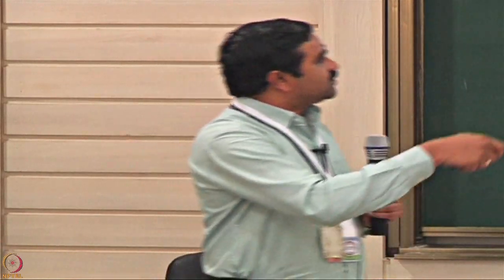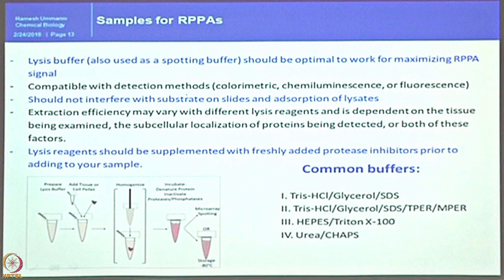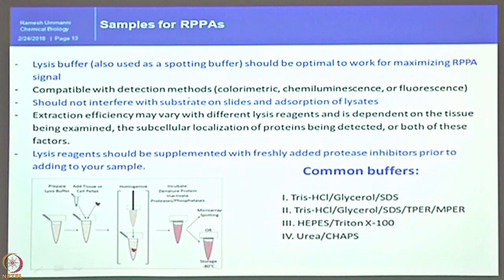The lysis reagent should be supplemented with freshly added protease inhibitors. If you want to understand post-translational modifications, you also need inhibitor cocktails like phosphatase inhibitors as well as protease inhibitors to prevent degradation of the protein of interest. From personal experience with four different buffers, they behaved entirely differently with different samples — believing any one buffer will work for everything is not true. This method always has to be optimized in your own lab, in your own hands, in your own setup.